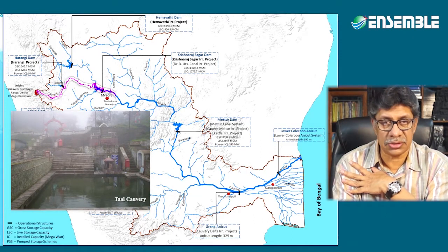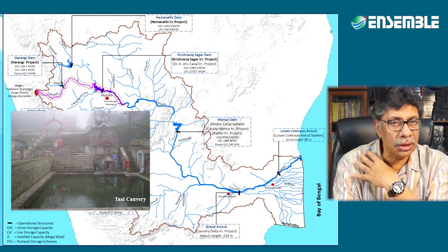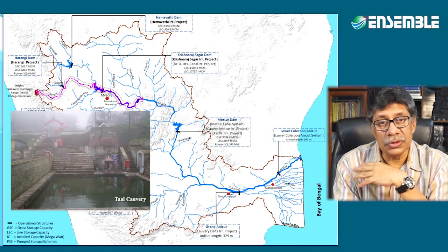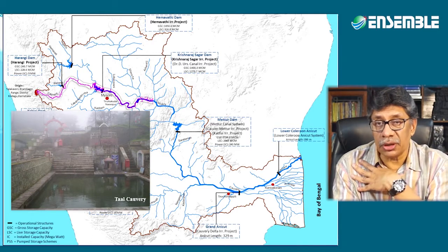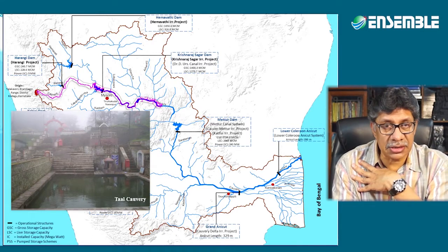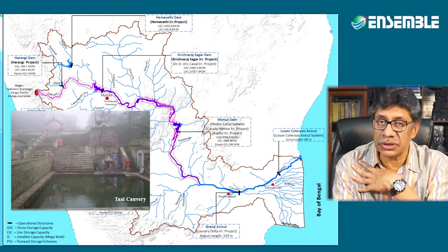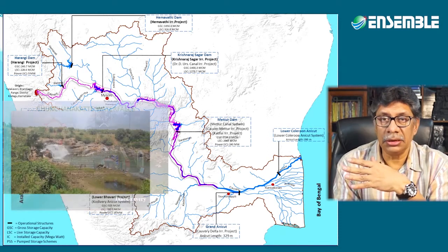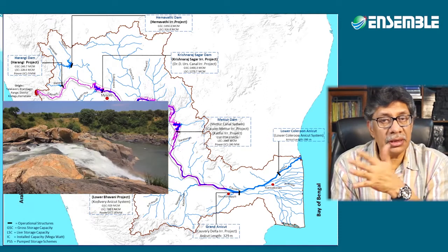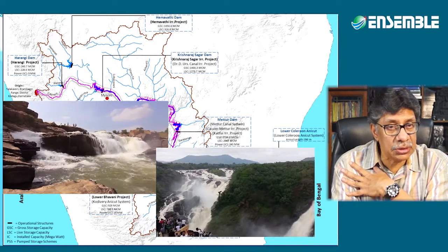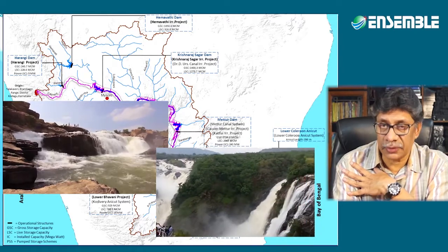The Kaveri rises at Talakaveri from the Brahmagiri hills in the Western Ghats in Kodagu district, that is Coorg, of Karnataka. It flows eastward crossing the Ghats. A series of rapids and waterfalls are found on its upper course, of which the Shivanasamudra falls are famous.